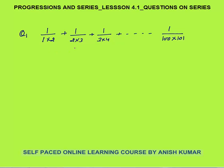We need to find the sum of this series: 1/(1×2) + 1/(2×3) + 1/(3×4), and so on up to 1/(100×101). You can see this series is neither in AP nor in GP, because the terms become 1/2, 1/6, 1/12, and 1/(100×101).